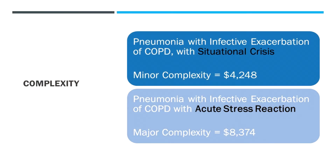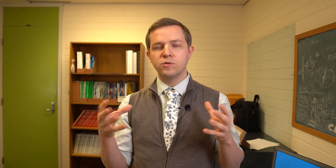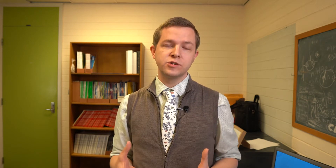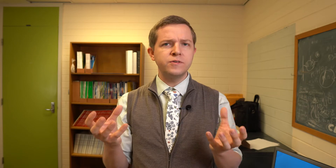Here's another example specific to medicine that illustrates the concept of complexity. If we have pneumonia identified with an infective exacerbation of COPD and a situational crisis involved, that's a minor complexity of $4,000. If we have that same DRG of pneumonia related to underlying lung disease, but also add an acute stress reaction due to the illness and its impact on the person's mental health, that increases the complexity of the pneumonia presentation to major, and the funding goes up to $8,000. It's great to see the interplay between mental health and medicine, which in reality is inextricably linked.